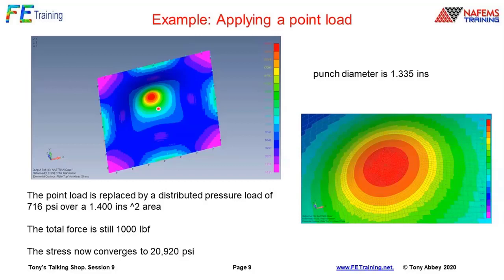The question is always: what are we trying to model? If we're modeling a needle, it'll be a very small diameter and we'd have to put a pressure patch on with a refined mesh — but we could get converged stresses. Trying to just put a point stab load in there as a singularity just won't work in that particular case.